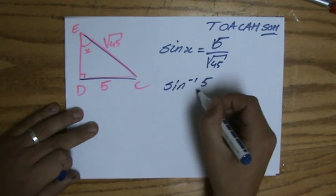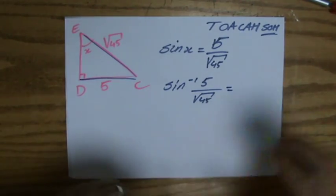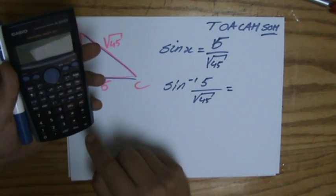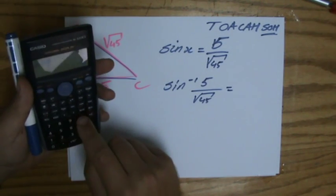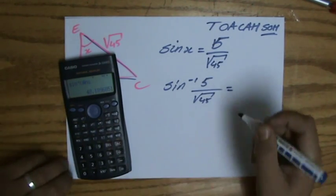To find the angle you do the inverse. I've explained this in previous videos. You get your calculator out: 5 divided by the square root of 45 equals, and then shift sine of that particular answer. Angles always to one decimal place.